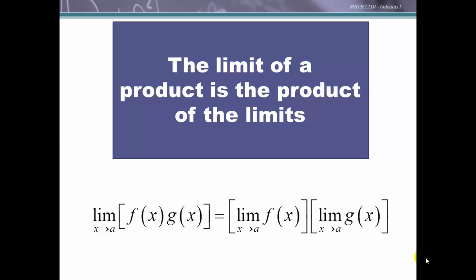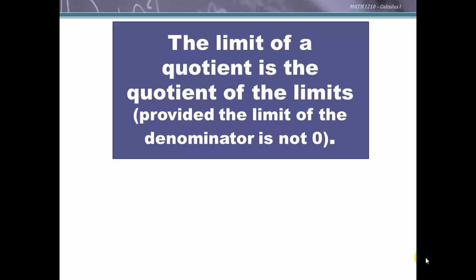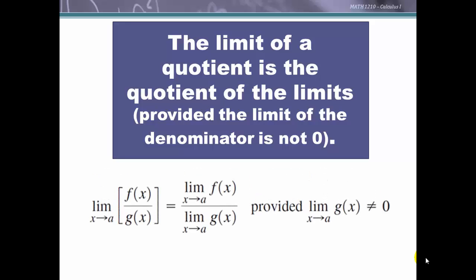The same idea applies to quotients, with one exception: the limit of a quotient is the quotient of the limits, provided the denominator is not zero. So we can take the limit of the numerator as x approaches a and the limit of the denominator as x approaches a, then divide — as long as we are not dividing by zero.